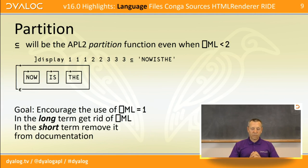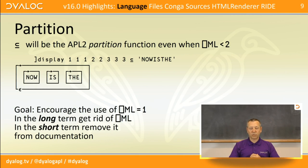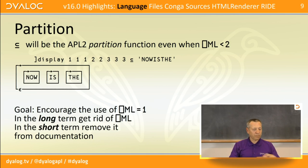The dyadic version of right shoe underbar is going to be the APL2 partition function, available when Quad ML is 2 or 3, but we've decided it's so useful we'd like it available always. The long-term goal is to get rid of Quad ML from documentation so that new users don't need to learn about it — though of course it will remain available for as long as there's any significant use.